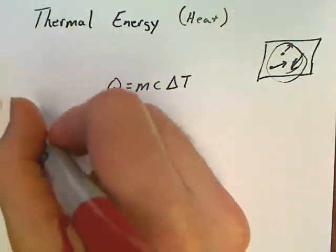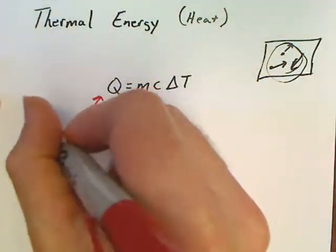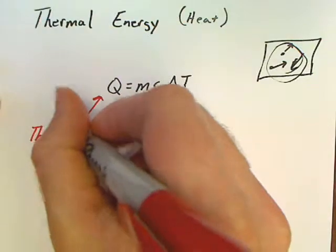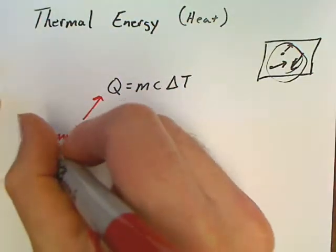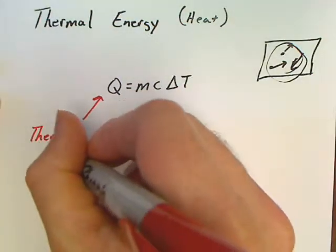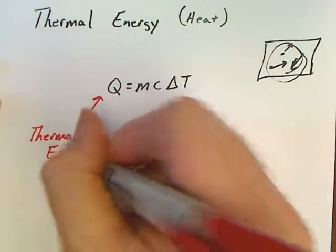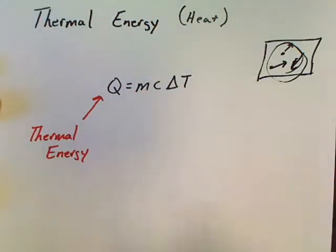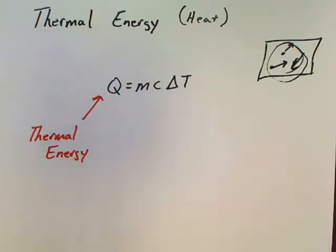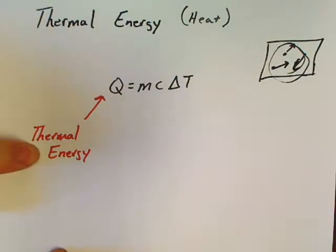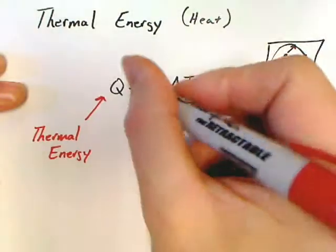What does everything mean in Q = MCΔTWell, Q stands for thermal energy. Somebody might say Q means heat — and essentially it does — but we've got a fancier name: thermal energy.